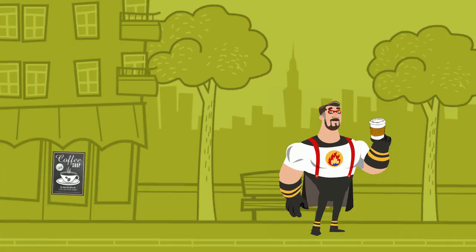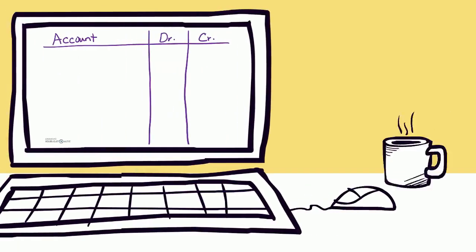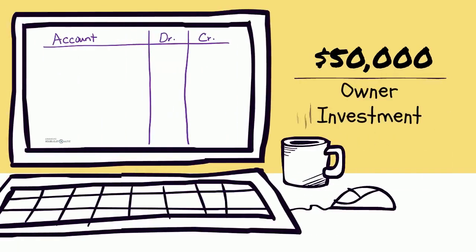Let's use the transactions from Novel Mug that we analyzed previously, but this time we're going to record them using debits and credits. We received a fifty-thousand-dollar investment from shareholders. When we analyzed these before, we looked at what part of the accounting equation was impacted and whether it increased or decreased. This was an asset increasing and an equity increasing — specifically, we got cash.